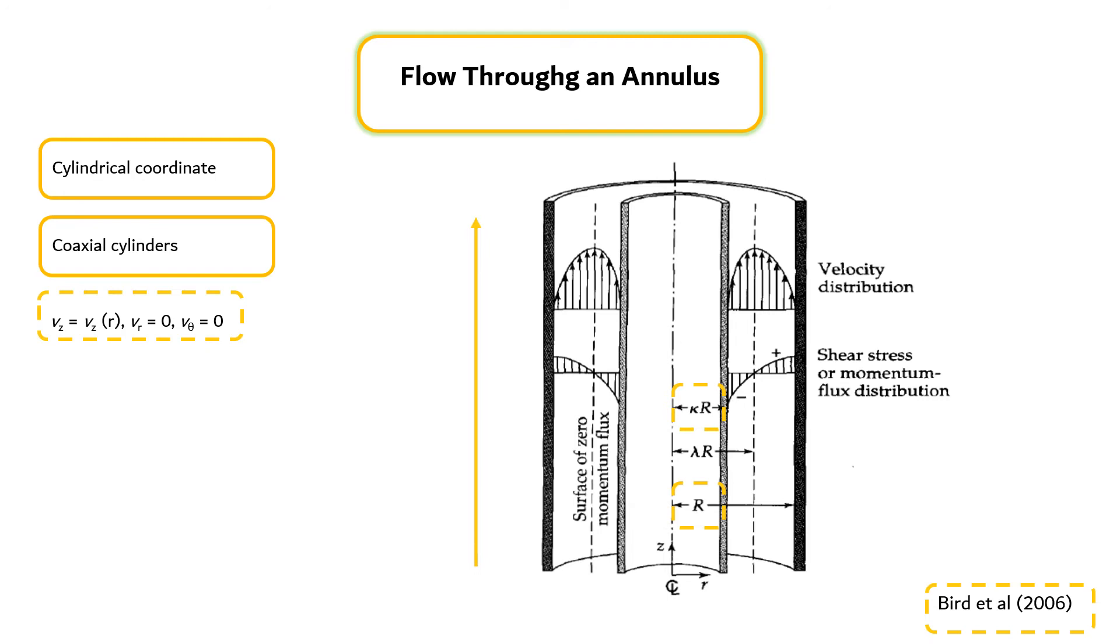Then we can make a momentum balance over a thin cylindrical shell of liquid. We obtain a differential equation as shown in equation 4.41. Following the procedures explained in the previous segment will give the momentum flux distribution as shown in equation 4.42, and the velocity distribution as shown in equation 4.43.